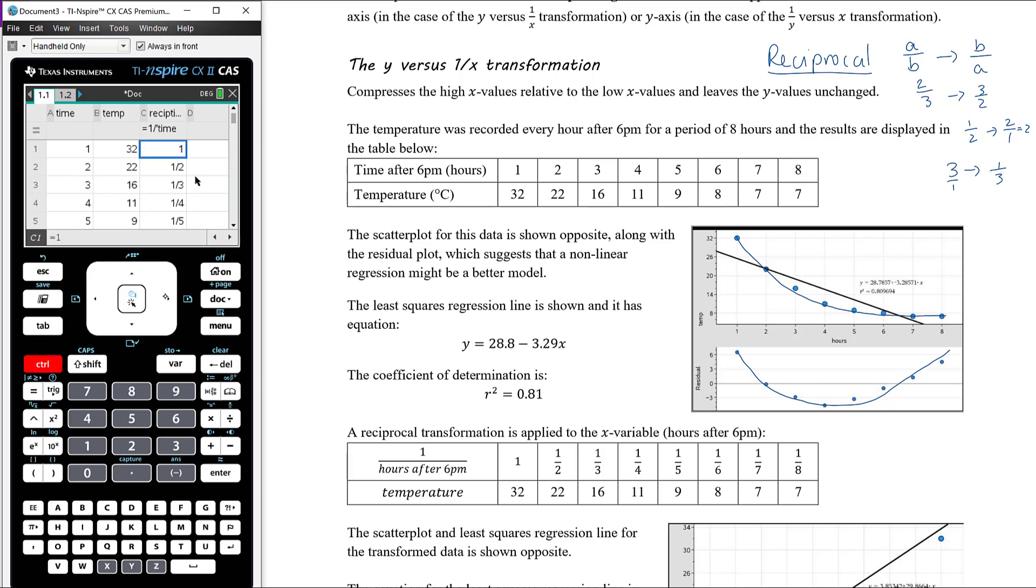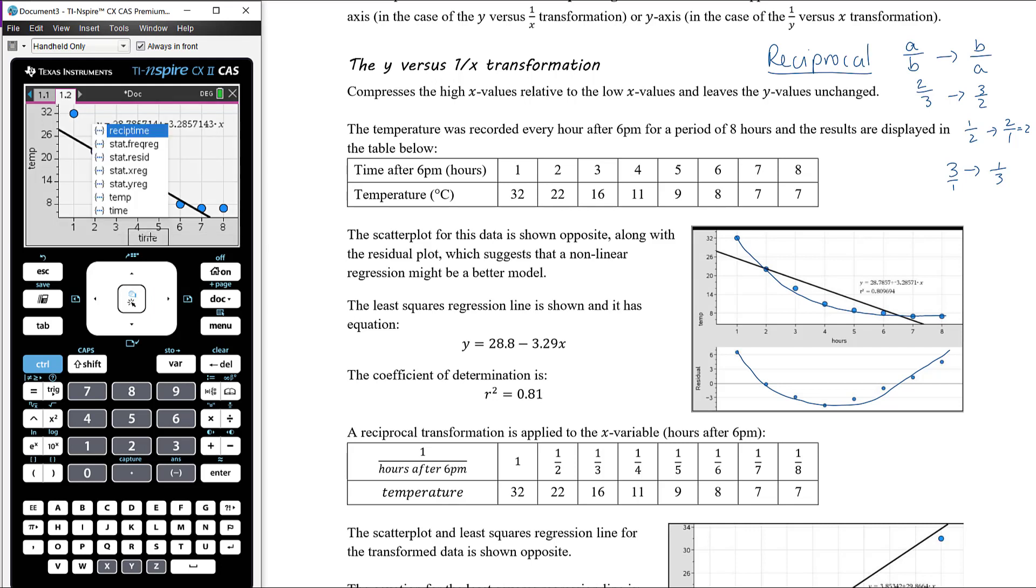Let's go back to the scatter plot. Rather than have time on the horizontal axis, we're now going to change that to reciprocal of time. Remember we talked about this back in the introduction to data transformation video. Because we're making all the larger numbers relatively smaller, the whole plot will flip around, but we also saw that we got a much better fit here. It's quite close to that line actually, and the coefficient of determination is 0.96. Previously it was 0.81, so we've seen quite a big improvement. This is certainly a much stronger model.